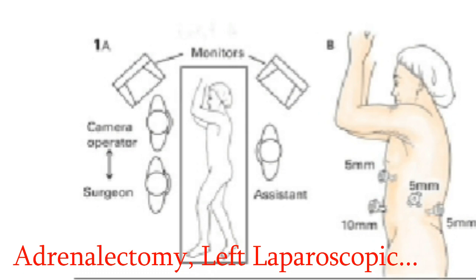A 5 mm port is placed in the far left lateral subcostal position, and a 5 mm port is placed just to the left of the midline through the upper rectus muscle sheath, just to the left of the round ligament. This reduces the chance of lacerating the epigastric artery, which might require suture ligation. These ports are in a line about two fingerbreadths below the edge of the costal margin. A third 5 mm port is placed in the anterior axillary line midway between the costal margin and the iliac crest.